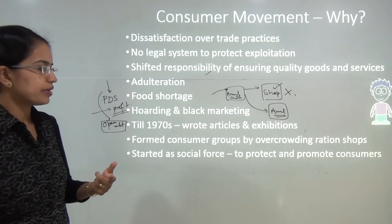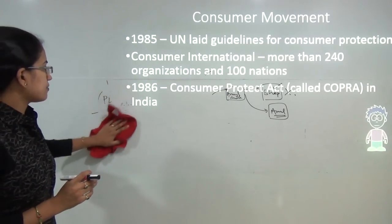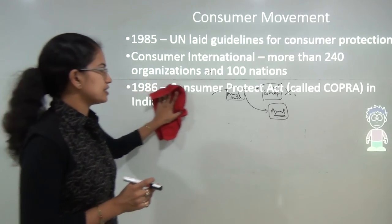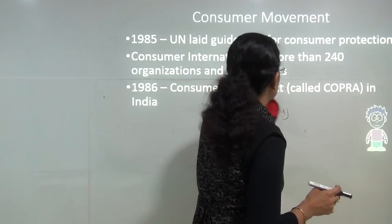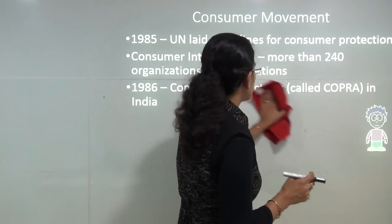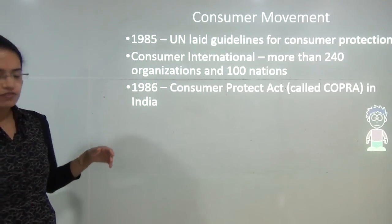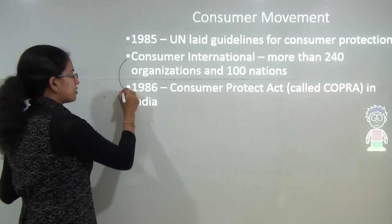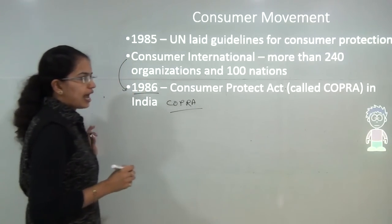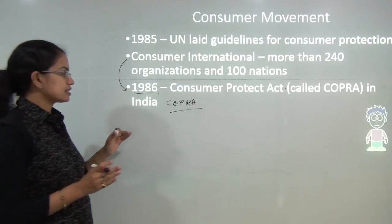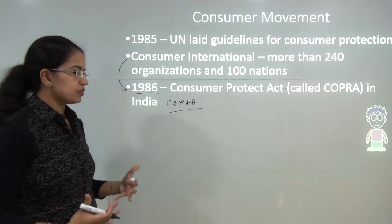In 1985, the United Nations laid down guidelines for the protection of consumers. Under this, Consumer International was established, which included 240 organizations across 100 nations. As a result, in India, the drive came into force — known as COPRA, the Consumer Protection Act — launched in 1986. The basic idea was creating awareness in consumers.